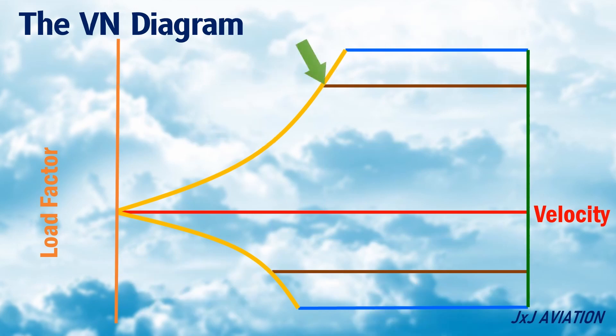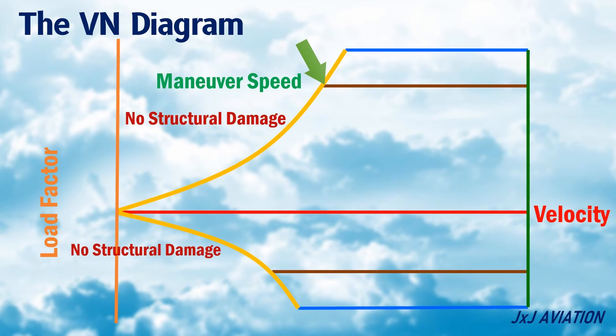This point is called the maneuver speed of the aircraft. This is because below this speed, there will be no structural damage to the aircraft while performing different maneuvers.